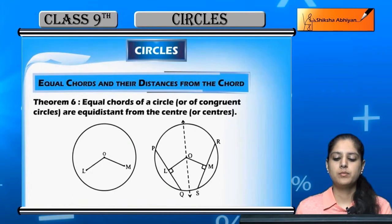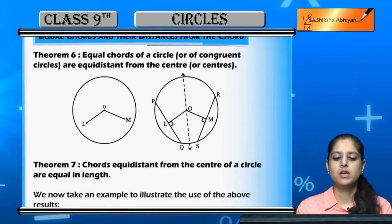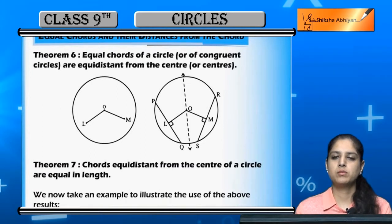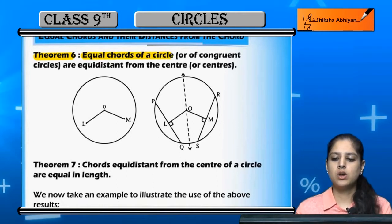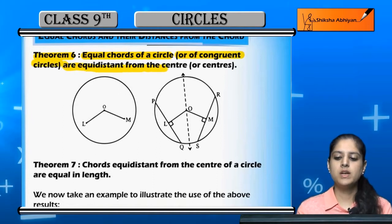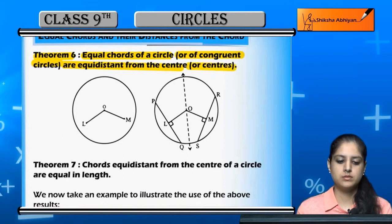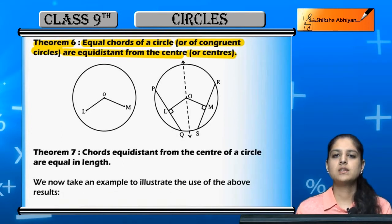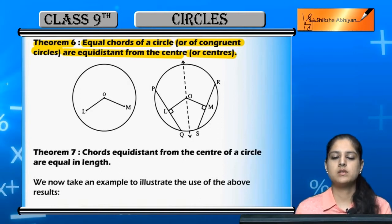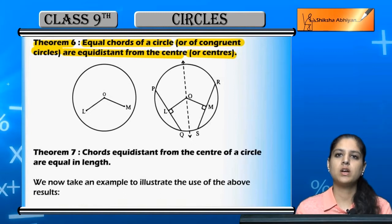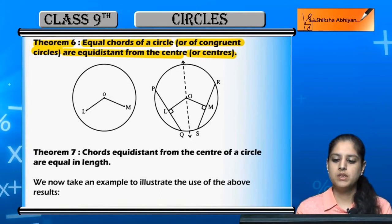The next topic is equal chords and their distances from the center. Theorem number six: equal chords of a circle or congruent circles are equidistant from the center. Equal chords from the center means that the distance from the center to the chord is equal.